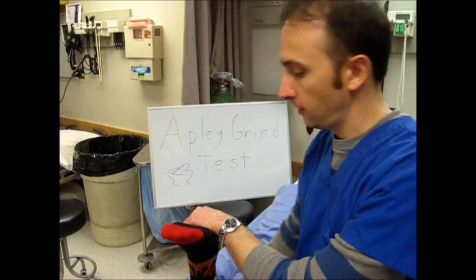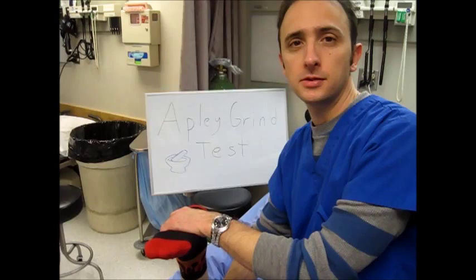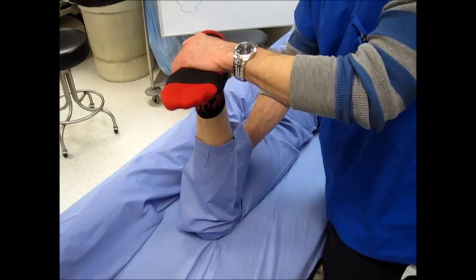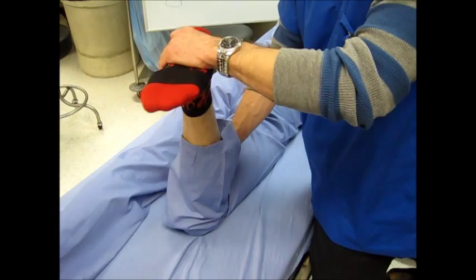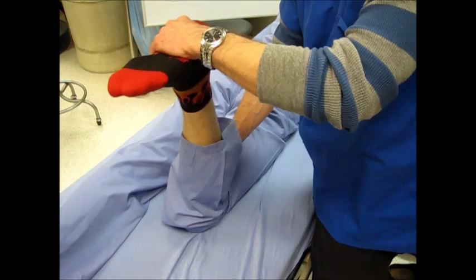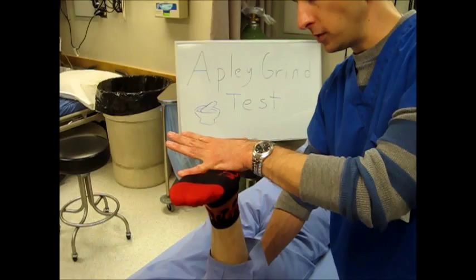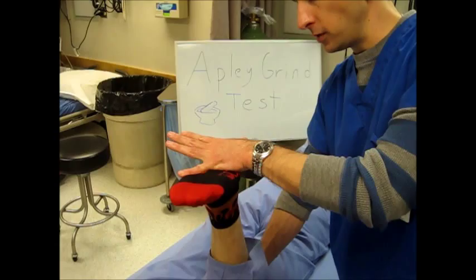So the last test we're going to do here is the Apley test, also known as the Apley grind test. This is also a meniscal test. With the patient prone, we're going to be putting a downward axial force and twisting the tibia. You may feel snap or pop and pain here in the meniscus. You'll see it both with downward compression, as well as some people put the knee there as a distracting force. These are variants of the Apley test.